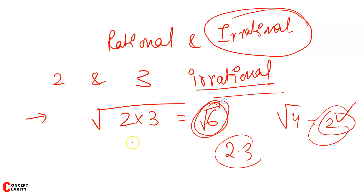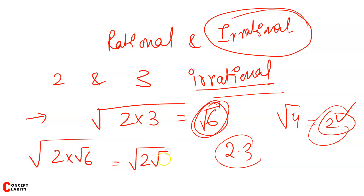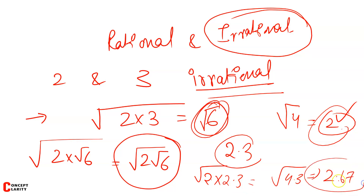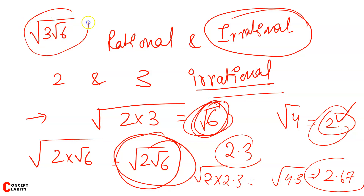We have one irrational number: √6. Next, we will see 2 into √6. Root 6 will be approximately 2.23, so 2 into 2.23 comes out to be around 2.67. So we have two irrational numbers: √6 and 2√6. You can also check that (3 into √6) / (pure root) also becomes an irrational number. Okay, this is a two-mark question.